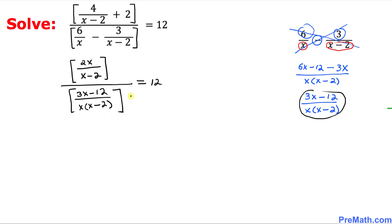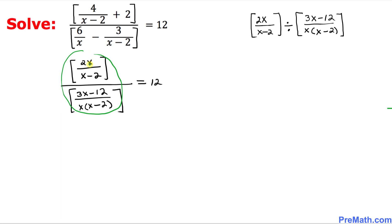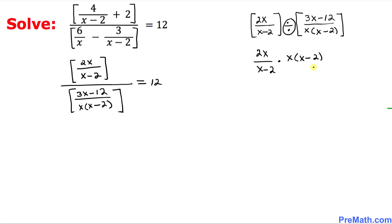So far so good. Now let's focus on the left hand side — this big fraction can be written as the top part divided by the bottom part. I can write this as 2x over (x minus two), and the division sign becomes multiplication when we flip the right hand side, giving us x times (x minus two) divided by (3x minus 12). The (x minus two) cancels out, so on the top we multiply 2x times x, giving us 2x² divided by 3x minus 12.